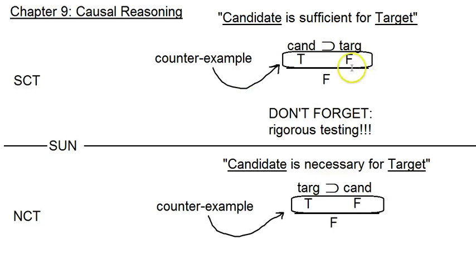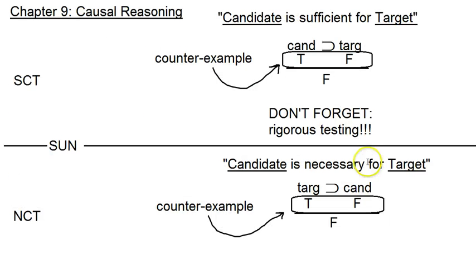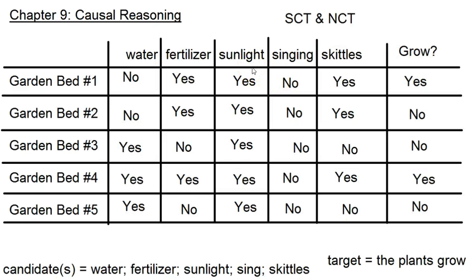But no matter how many 'no, no' cases you get — cases where both the candidate is absent and the target is absent — it doesn't matter. All we care about are cases where the antecedent is true and the consequent is false; those are the only ones that matter for a counter example. Fertilizer passed. How about sunlight? Sunlight passes the necessary condition test too — but in this case, we aren't rigorously testing. The same way singing wasn't rigorously testing for the sufficient condition, sunlight is not rigorously testing for the necessary condition. Here, we've got to have some cases where the candidate isn't present — we want to see what happens without it. How do I know sunlight is not necessary for the plants to grow if I never take the sunlight away? We never did that, so we didn't rigorously test. So it passes the NCT, but trivially so.